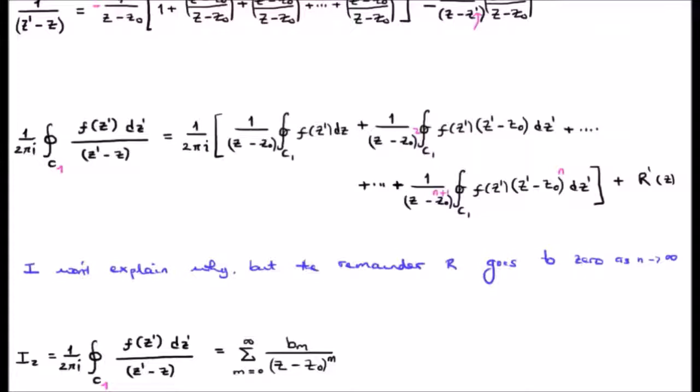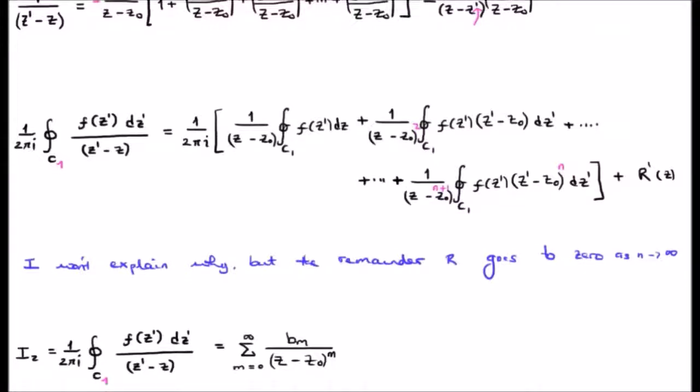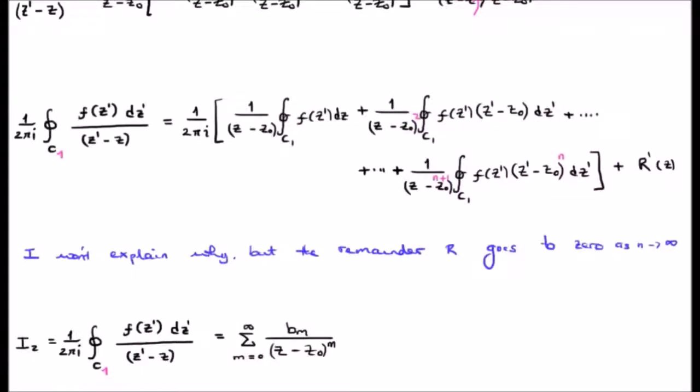Once again, I won't explain why, but the remainder goes to zero as we let N go to infinity. In doing so, we get our B sub N's.